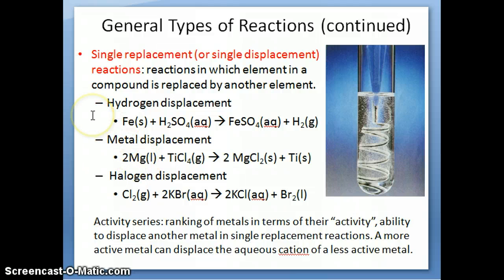So for example, in this case, you have magnesium and titanium. Magnesium will be ranked higher in terms of its activity compared to titanium because magnesium can displace titanium in a single displacement reaction. So that's what it says here. A more active metal can displace the aqueous cation of a less active metal. I'm not going to use much of activity series in this class.